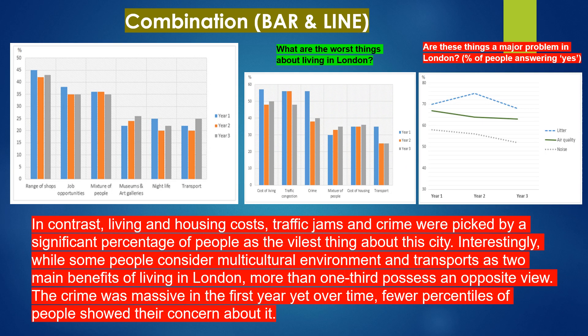In contrast, living and housing costs, traffic jams and crime were picked by a significant percentage of people as the worst things about the city. Interestingly, while some people consider multicultural environment and transport as two main benefits of living in London, more than one-third possess an opposite view. The crime was massive in the first year, yet over time fewer percentiles of people showed their concern about it.